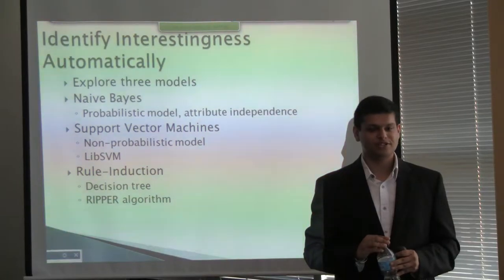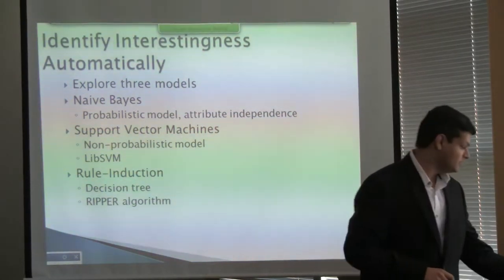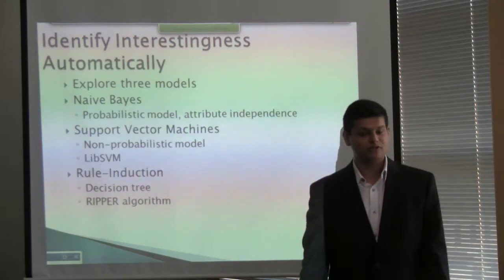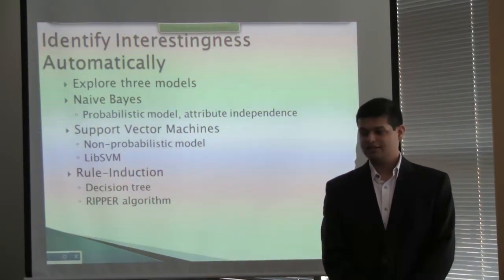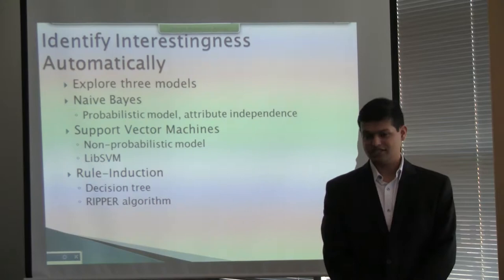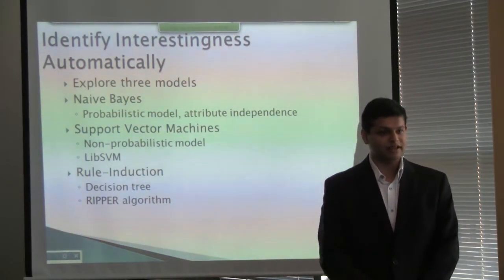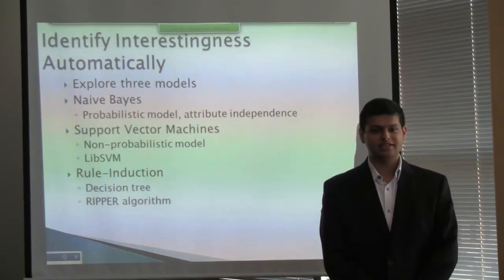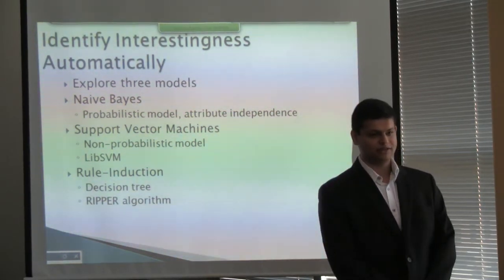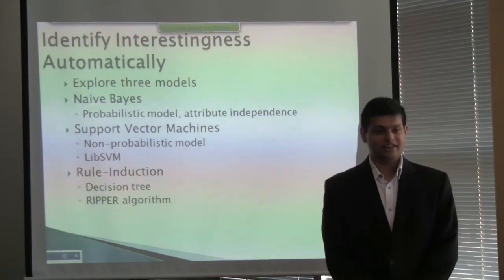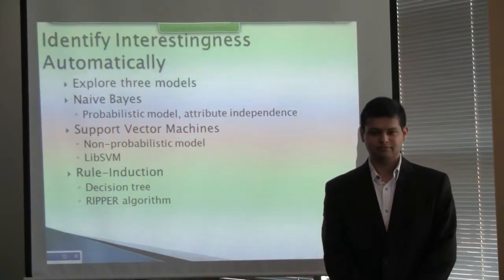In this work, we are trying to identify interestingness automatically. To do that, we are exploring three models: Naive Bayes, which is a probabilistic model; Support Vector Machines, which is a non-probabilistic model based on hyperplanes, using the libSVM algorithm; and rule induction, which is a decision tree-like algorithm.